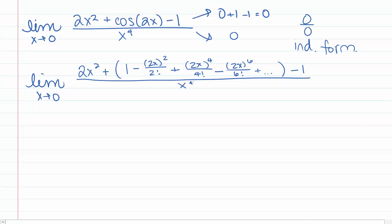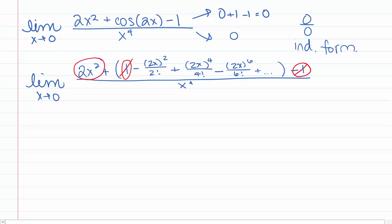We have a +1 from the cosine series and a -1, so those add to 0. We also have 2x² and a term with x² from the cosine expansion. The cosine x² term gives (2x)²/2! = 4x²/2 = 2x², so these two terms also cancel to 0.